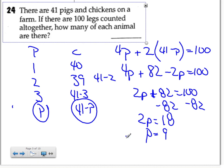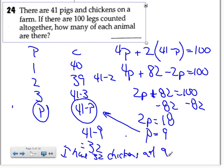So I have 9 pigs. If I take it and put it in here, 41 minus 9 is 32, I hope. And so altogether, I have 32 chickens and 9 pigs.